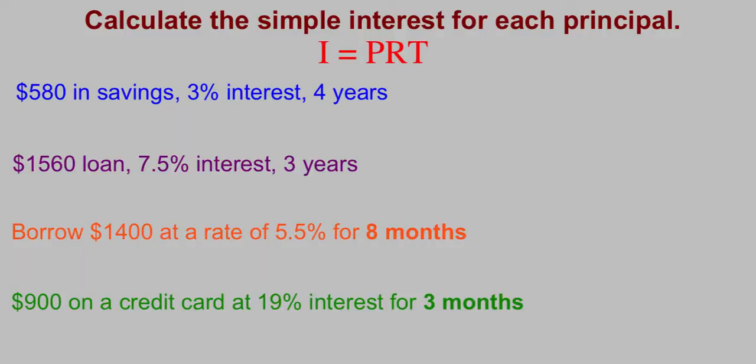We're going to use our formula. Interest equals principal times rate times time, and writing them next to each other means to multiply. Let's try each of these. First one, $580 in savings, that's your principal, 580.